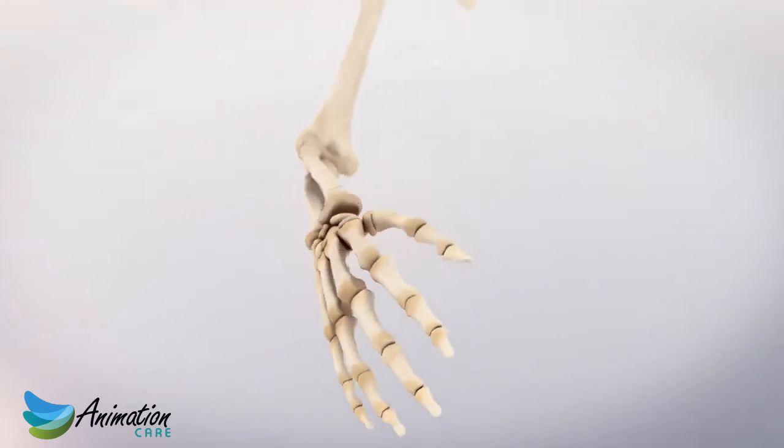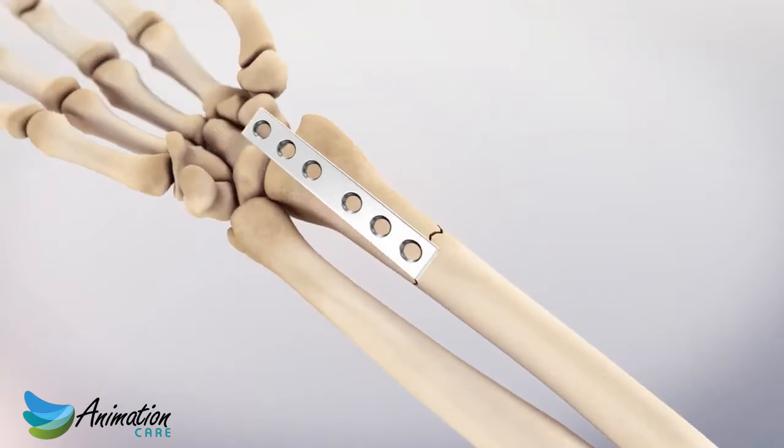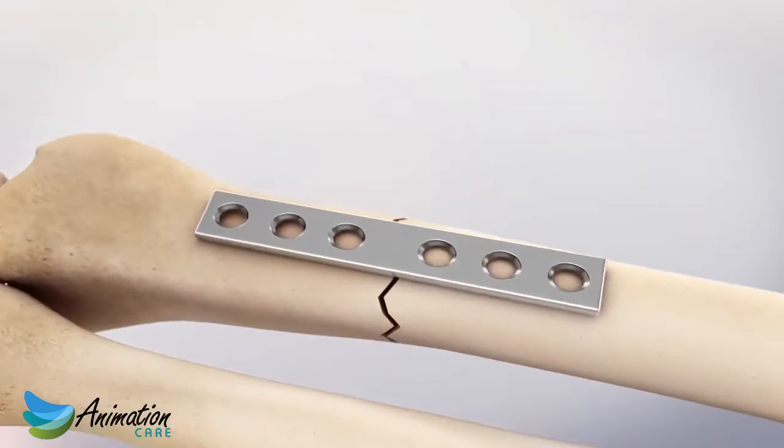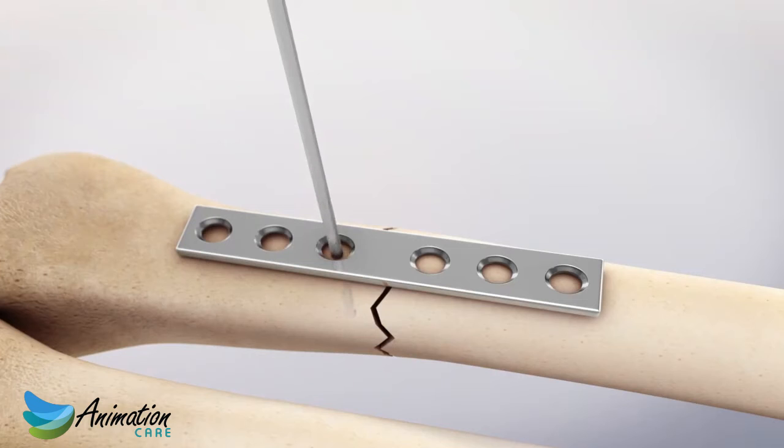When a bone fracture requires surgical intervention, often a plate is set across the fracture site. A drill is then used to create pilot holes for screws to secure the plate in place.